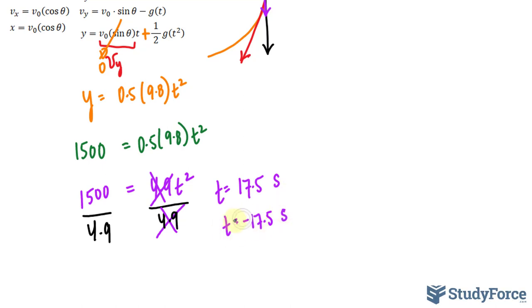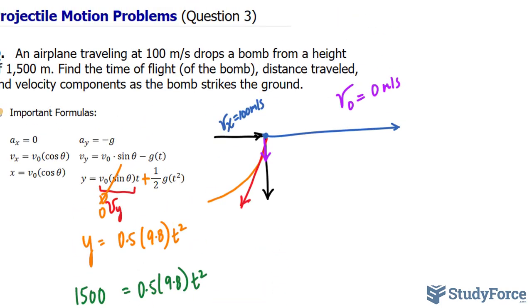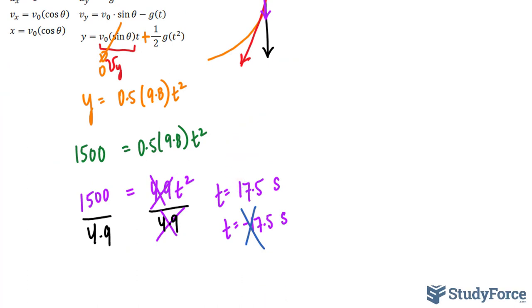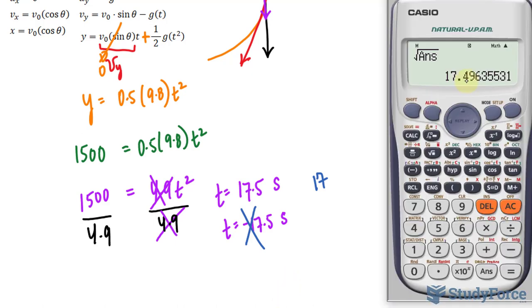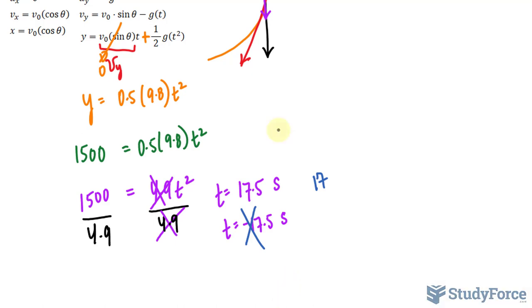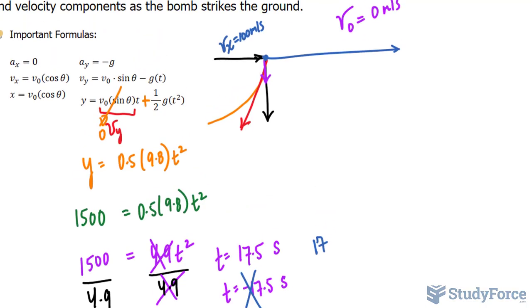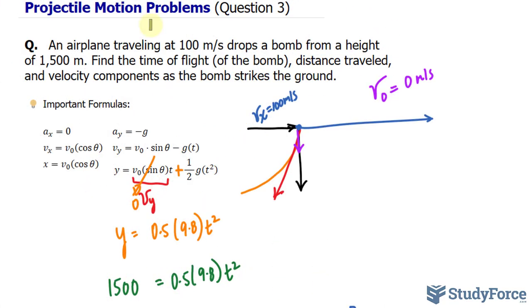Of course, it doesn't make sense to select a negative t value since we're dealing with time. Let's continue to use 17.5. If you're taking into account significant figures, neither of these numbers have a decimal, so technically this should be only 17 seconds. But I'll continue working with 17.5 just so I don't run into any problems. So it takes 17.5 seconds roughly for this bomb to touch the ground. That answers the first part, the time that the bomb takes to hit the ground.